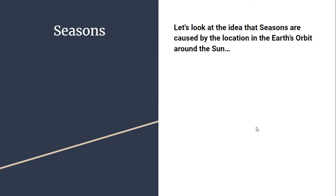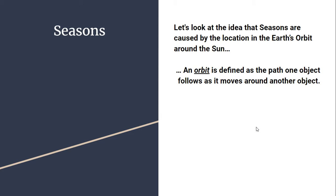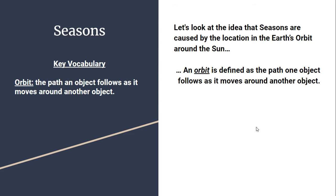We're going to explore that first idea about proximity. If seasons are caused by the location in Earth's orbit around the Sun, it's important to understand that an orbit is defined as the path that an object follows around another object — that could be the Earth around the Sun, or the Moon around the Earth. Notice that 'orbit' showed up in our key vocabulary terms; it should be recorded in your notebook.